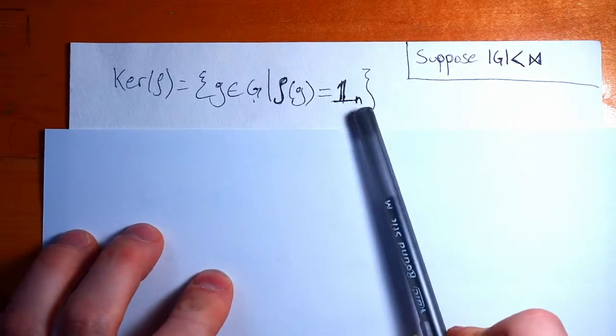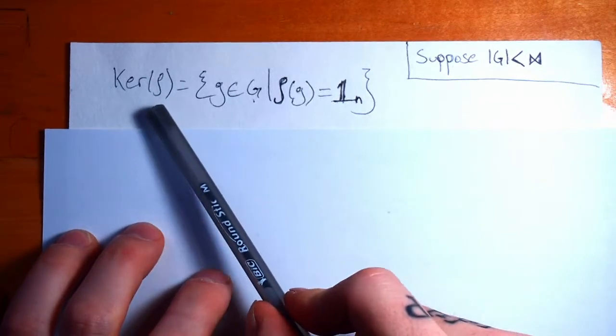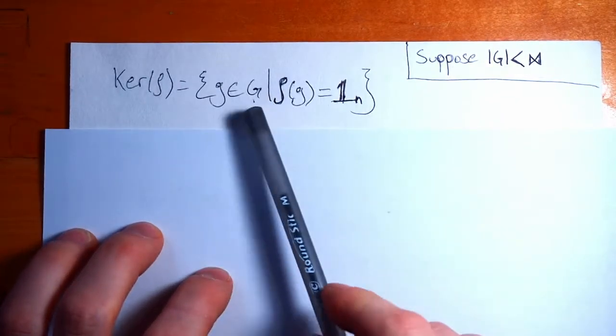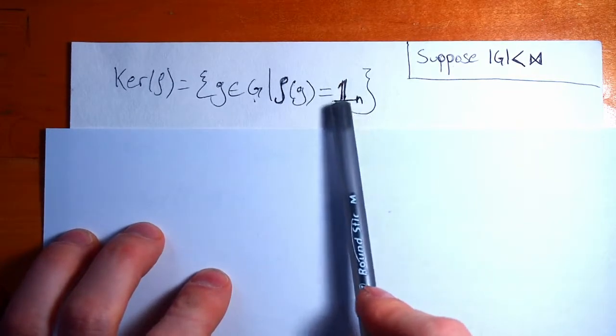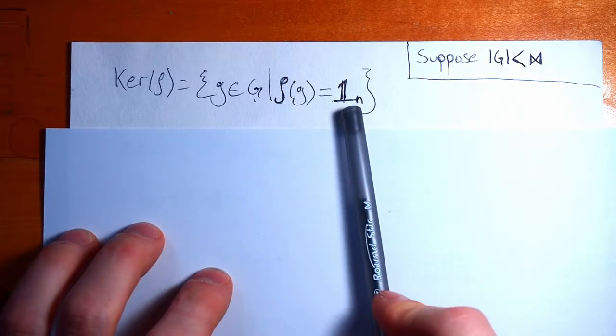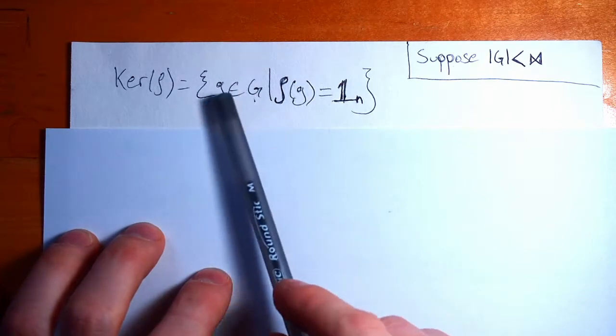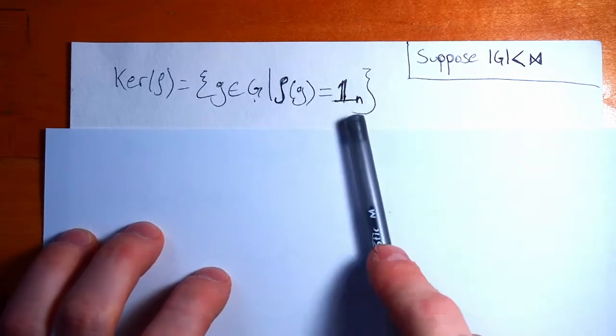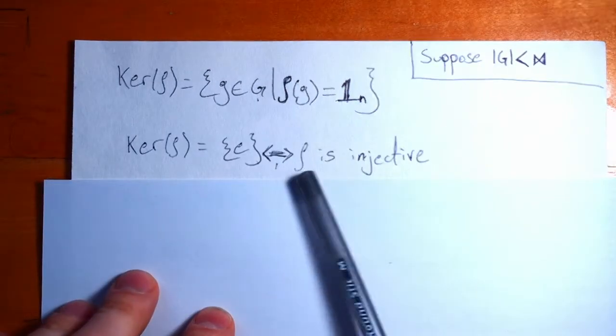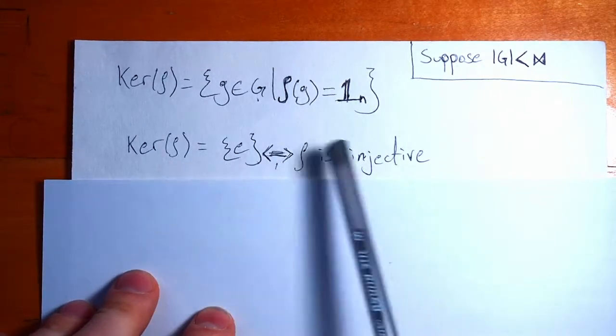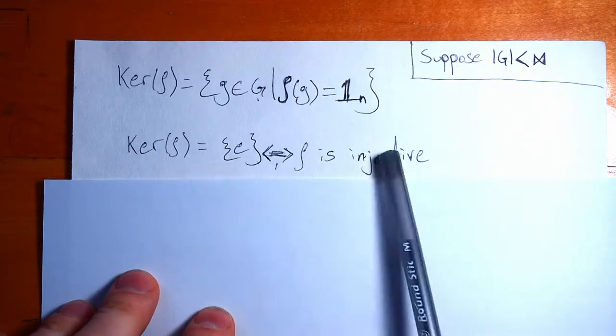So here we have the definition of the kernel, right? The kernel of a map, in this case our map is a representation, is all the elements in the domain, all the things we plug into our map, that get mapped to the identity on the output. So all the group elements we plug into our representation that come out on the other side as the identity matrix. Another way to say this is that our representation is injective. These are two ways of saying the exact same thing. It's one to one.